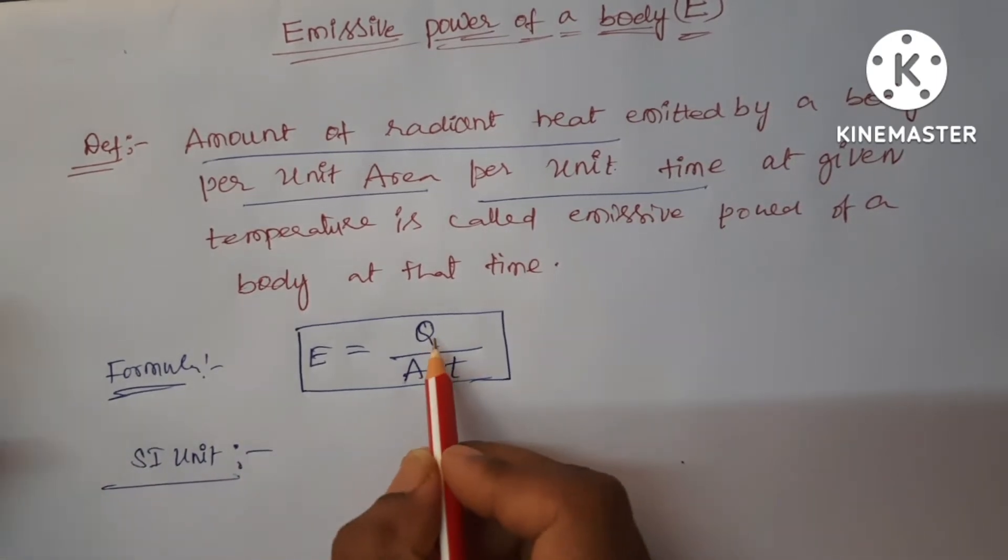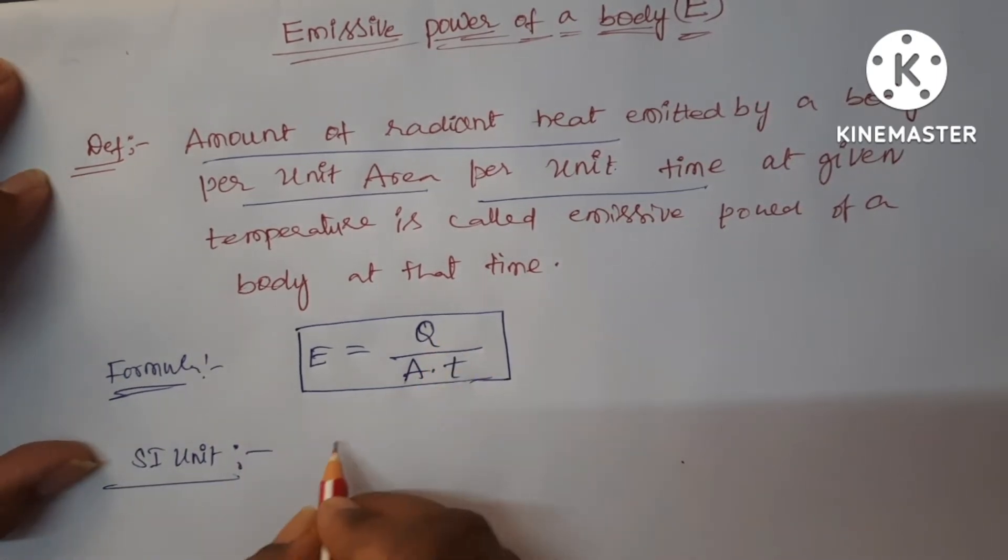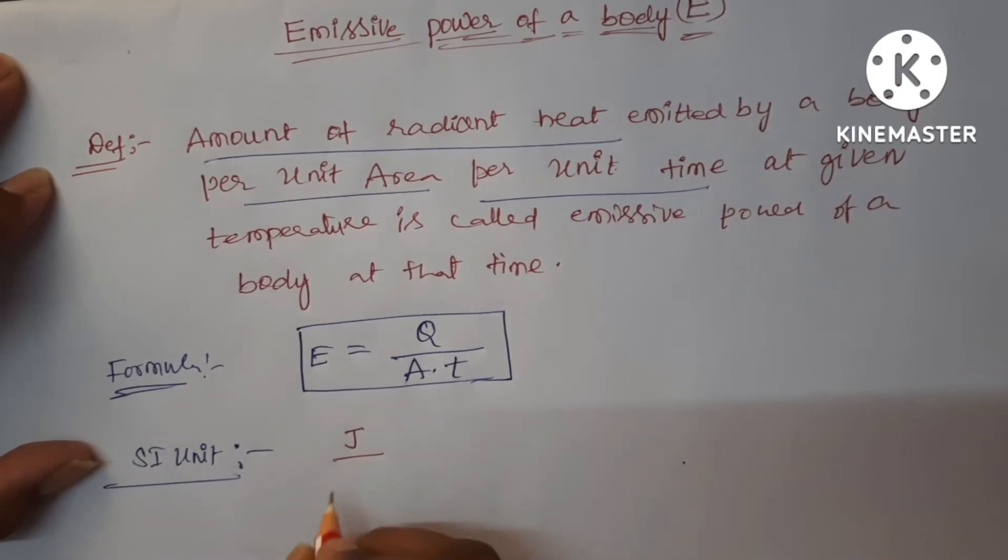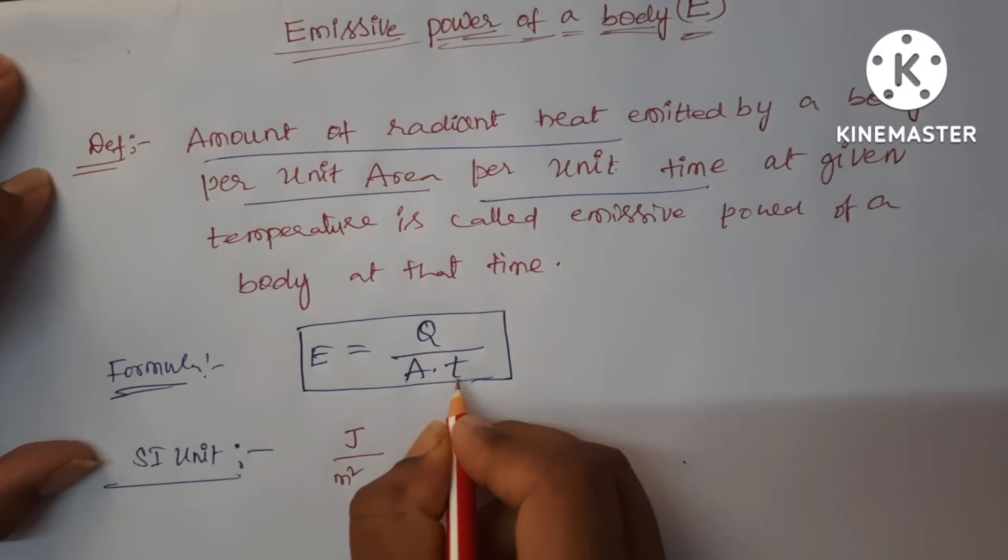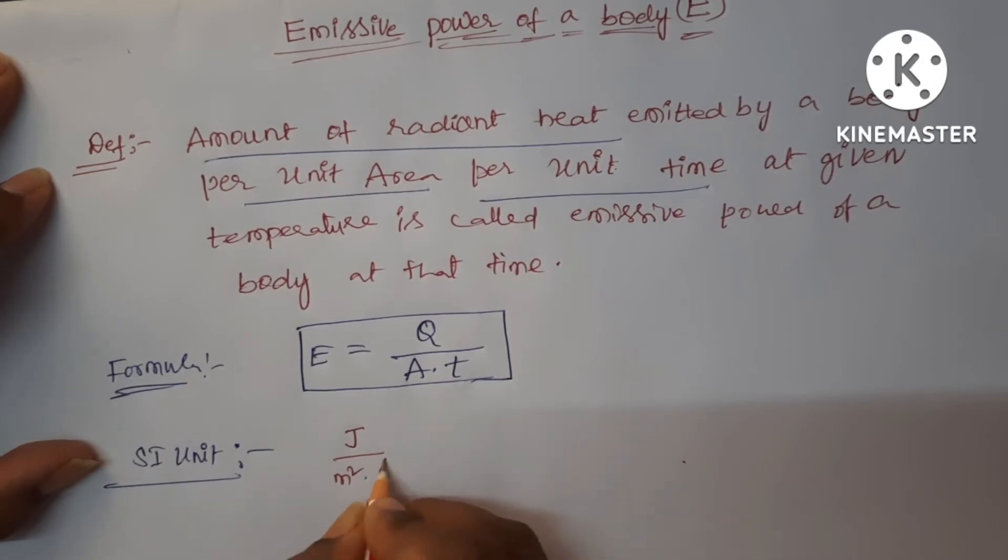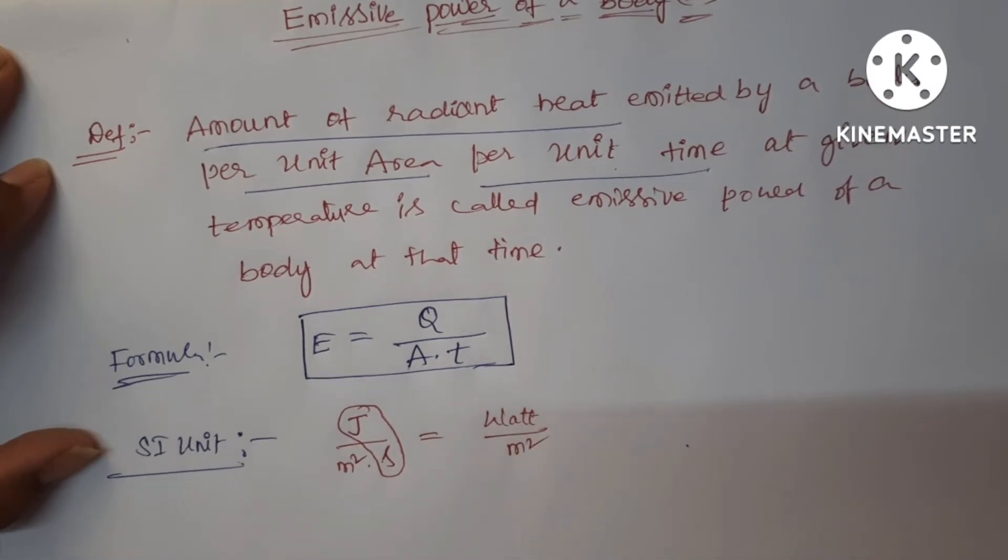For that, let us see. Heat is a form of energy, so Joule per area is meter square and time is second. And here Joule per second can be written as watt upon meter square.